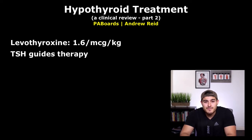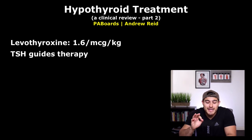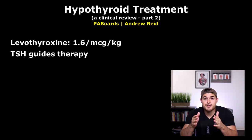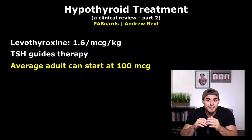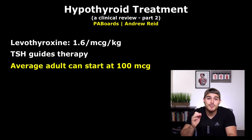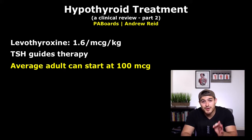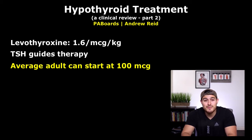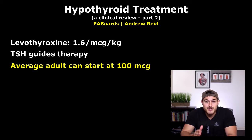The dose of therapy is 1.6 micrograms per kilogram per day on average. Some clinicians estimate and start around 50 or 100, but the standard is 1.6 micrograms per kilogram per day. For the majority of average adults, 100 micrograms per day is a good starting point. We then adjust by drawing TSH levels and increasing the dose accordingly until we reach our target TSH.